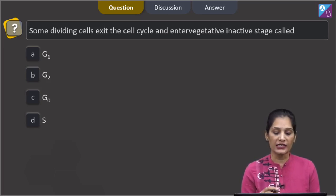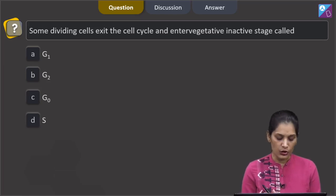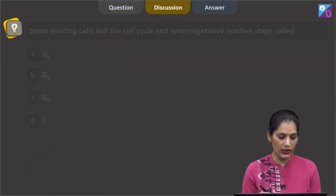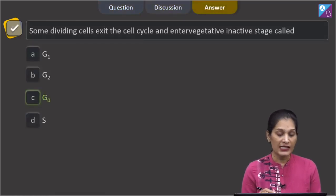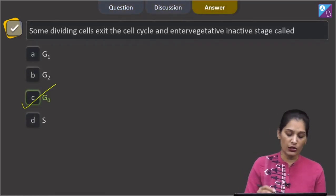G0 is the inactive stage where cells generally do not proliferate. So the correct option for the given question is option C which is G0.